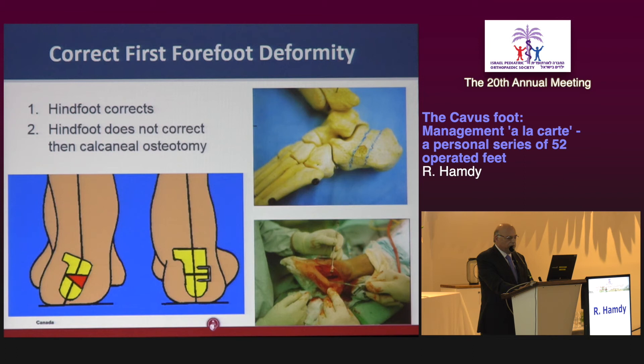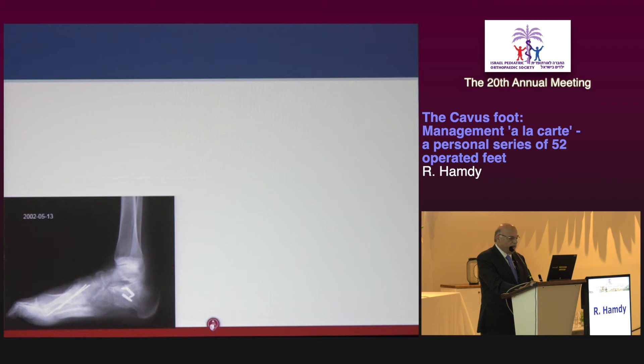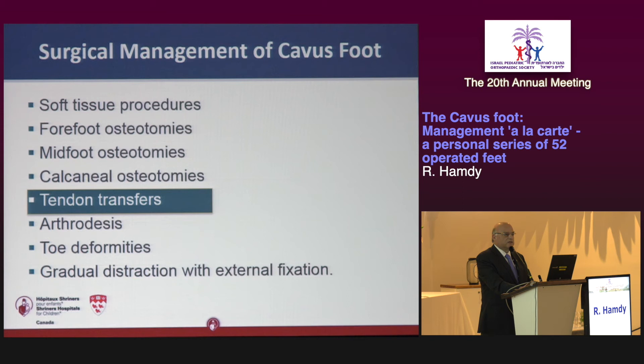This is a typical Dwyer osteotomy — here is the wedge of bone removed. I fix it with K-wires, though you can also use staples to correct the varus.